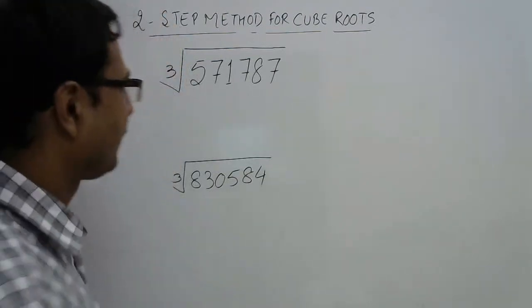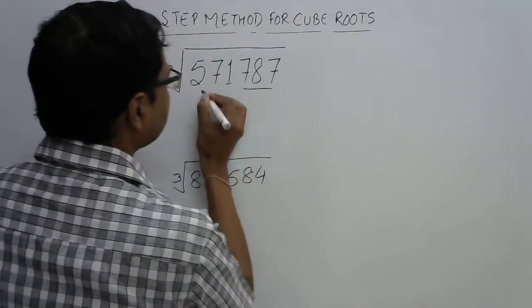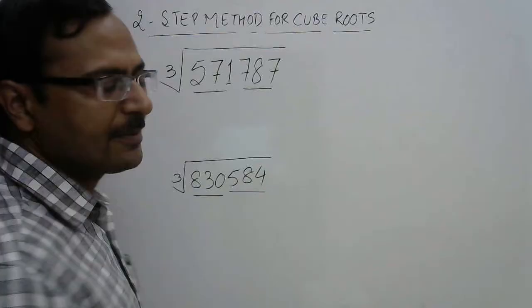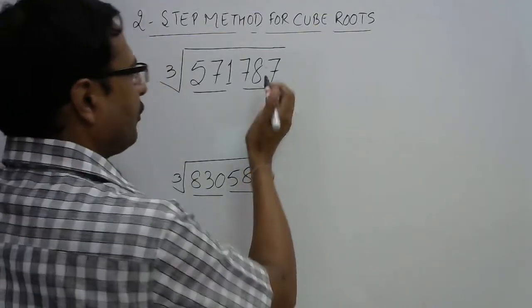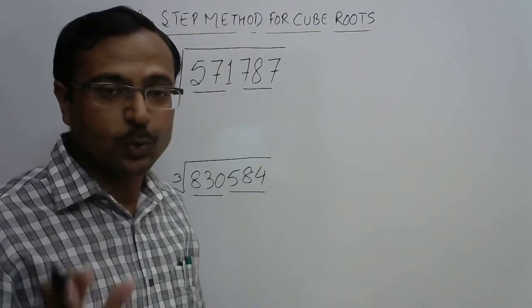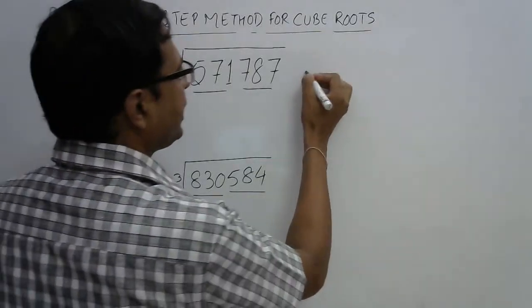First, make triplets. So there are two triplets here from the right-hand side. The first triplet, 787, we have to just see the unit digit here. If the unit digit here is 7...